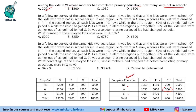The next two questions have extra data. In a follow-up survey of the same kids two years later, it was found that all kids were now in school — so the value of O becomes 0 and these values no longer exist. Of the kids who were not in school earlier: in one region 25% were in G now with the rest enrolled in P; in the second region, all such kids were in G; while in the third region, 50% had joined G with the rest joining P.